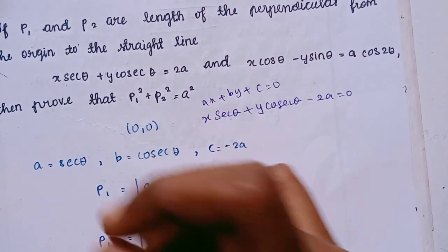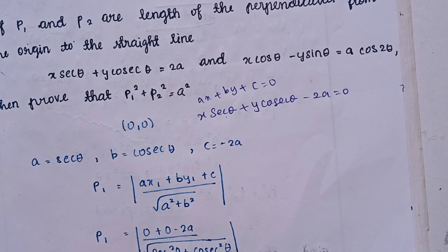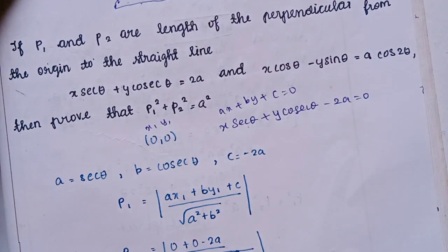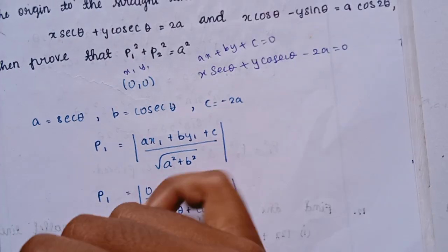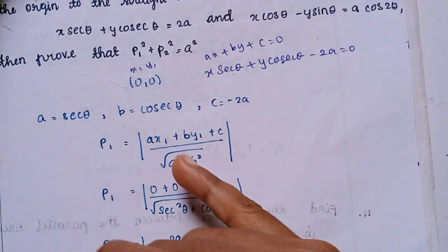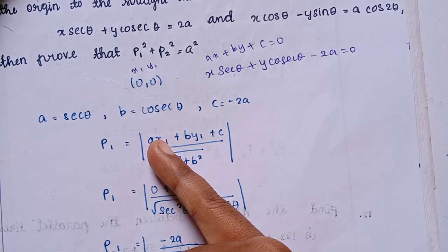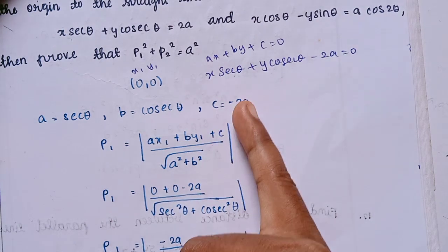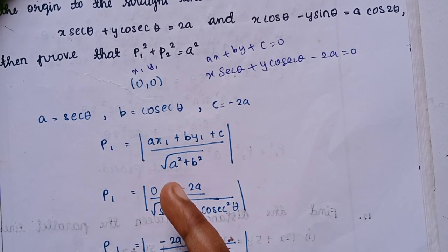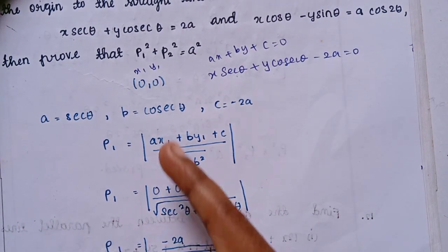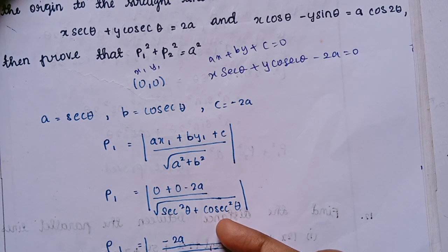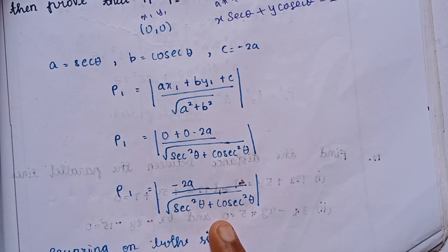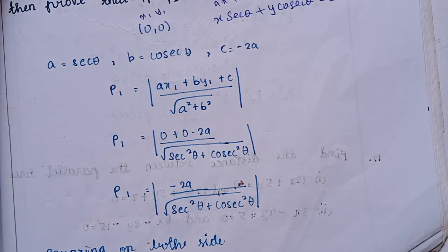Now we have to write the point. The point is x1, y1. We substitute it. x1 is the point — 0 is the point. y1 is the point — 0 is the point. c is the point. So we substitute the origin (0, 0) into the perpendicular distance formula.